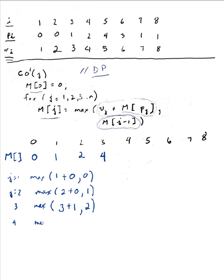For j equals 4, max of: V of 4 is 4, plus M of p(4) — p(4) is 2, so M of 2 = 2 — or M of 3, which is 4. The max is 6, so M of 4 = 6. For j equals 5, max of: V of 5 is 5, plus M of p(5) — p(5) is 4, so M of 4 = 6 — or M of 4, which is also 6. That gives 11, so M of 5 = 11.